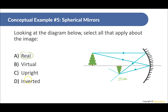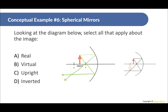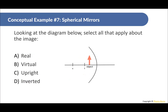Example 3: We draw the ray parallel to the principal axis, which reflects through the focal point, then draw a ray through the focal point which reflects parallel. Where these two rays converge, that's the image location. The image forms on the same side as the object, so it is real, and it is inverted since it's upside down.